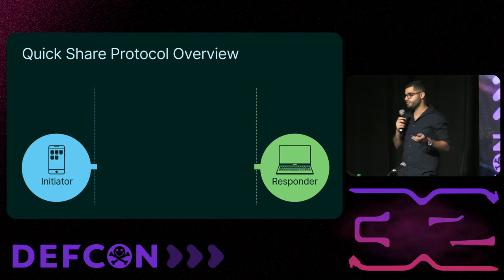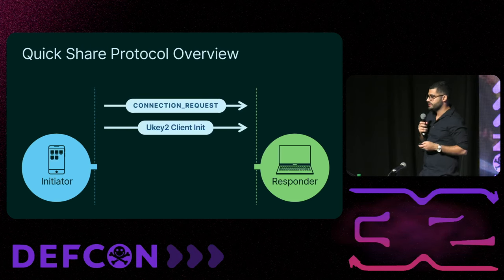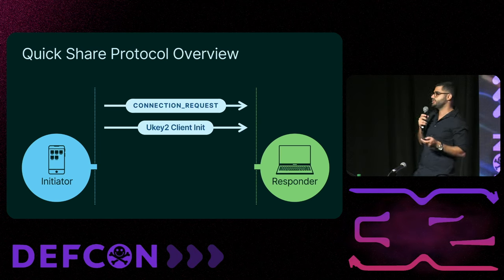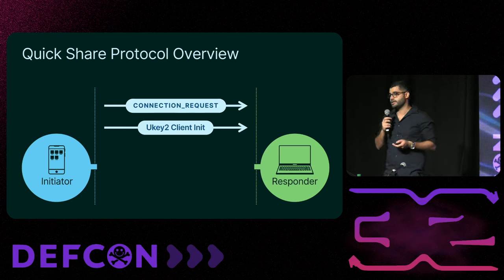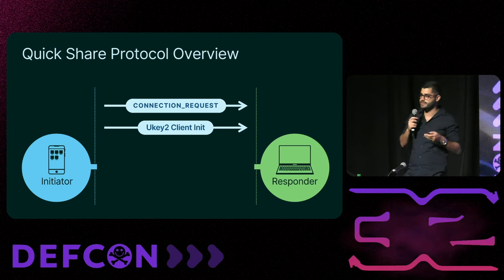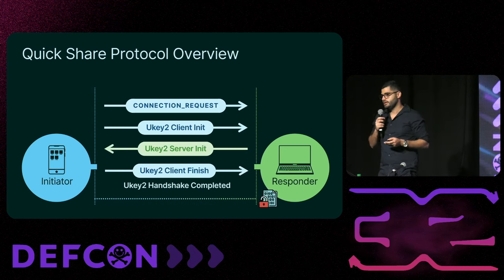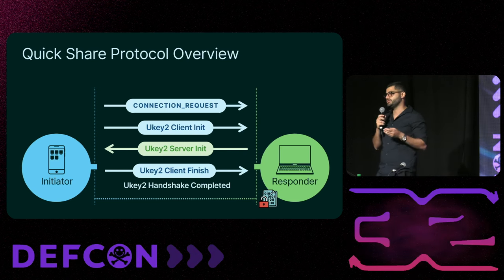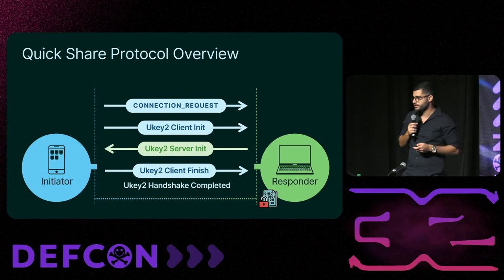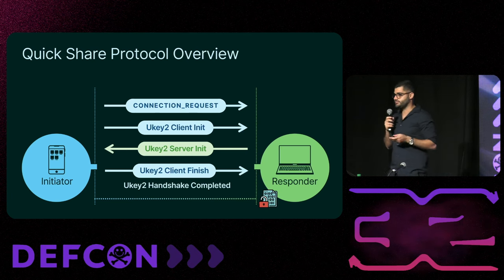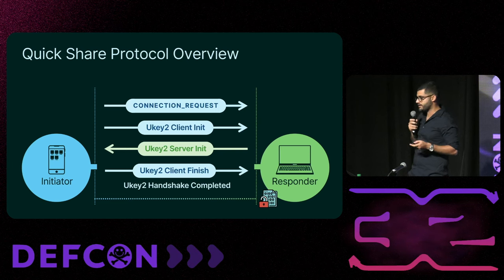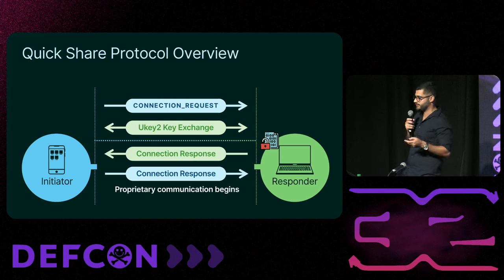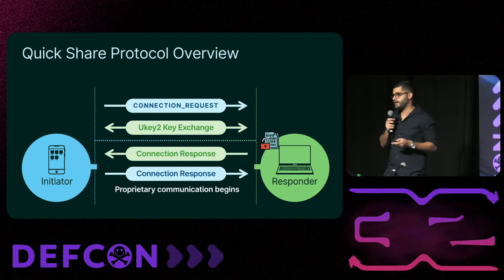In our protocol overview, we examine packets sent during a file transfer from a phone to a PC. The first stage is a connection request packet. The initiator then starts an encryption handshake by sending a uKey Client Init packet. The responder replies with a uKey Server Init packet, and the initiator responds with a uKey Client Finish packet. At this point the uKey encryption handshake is complete, ensuring all subsequent packets will be encrypted.